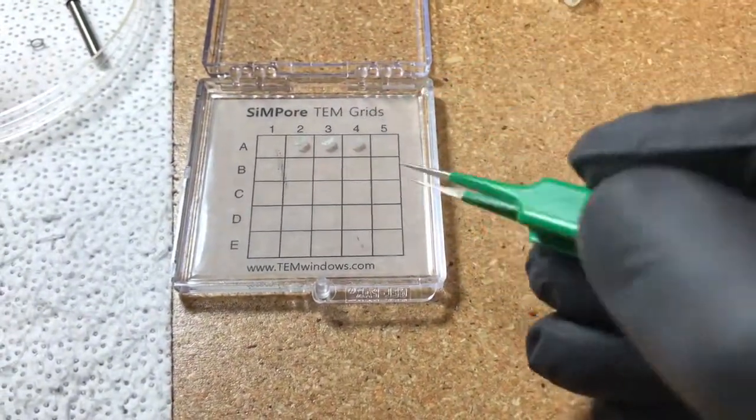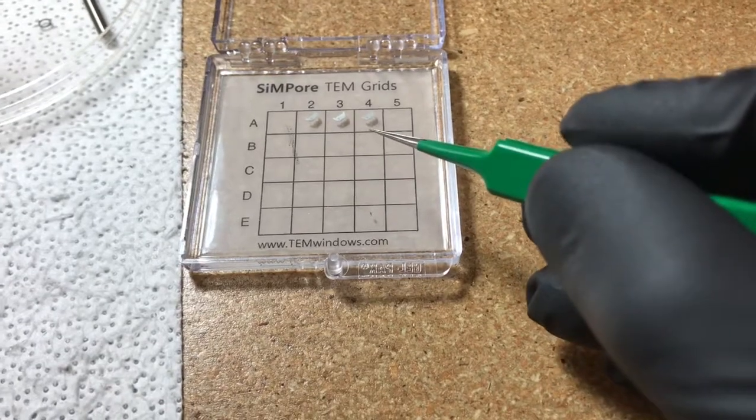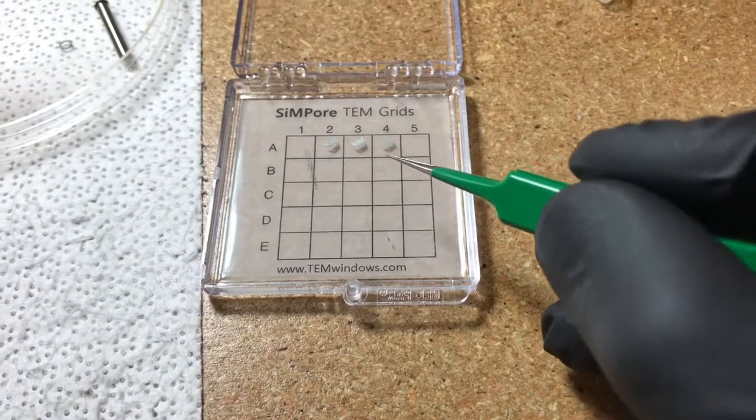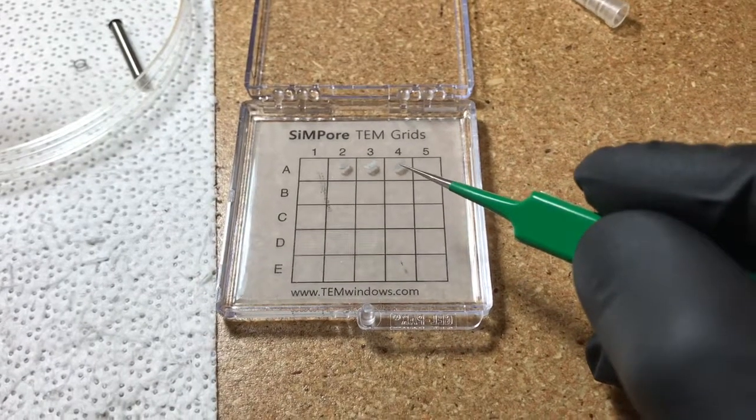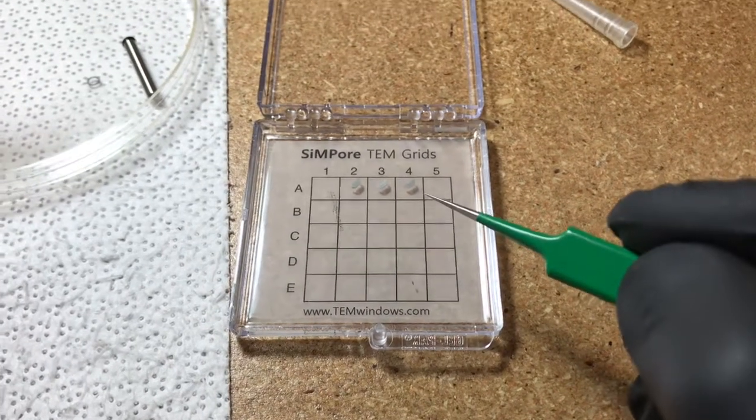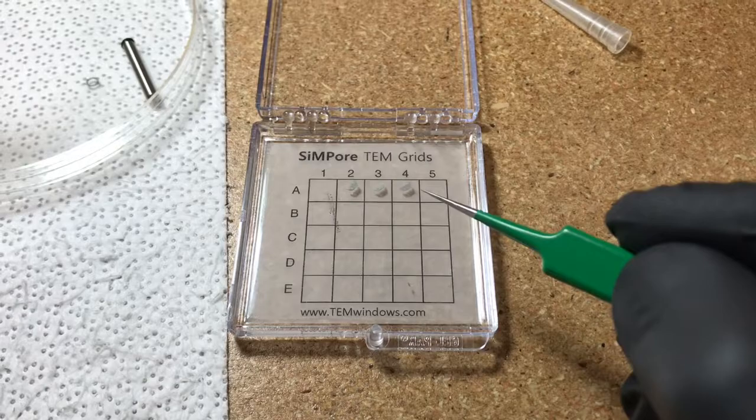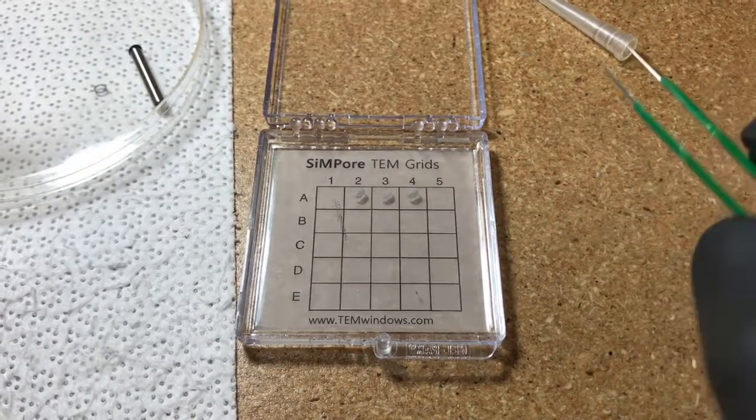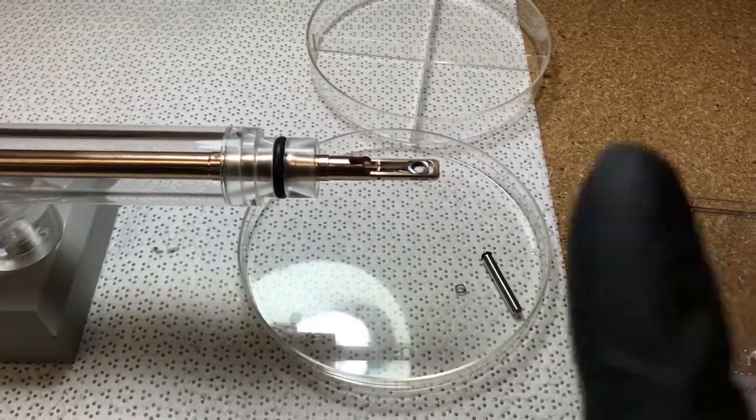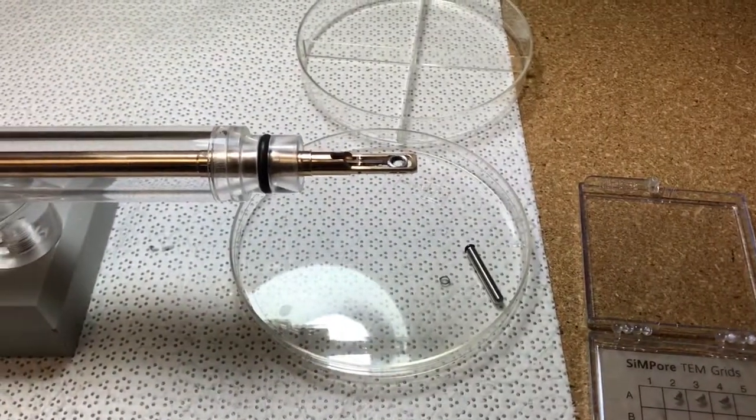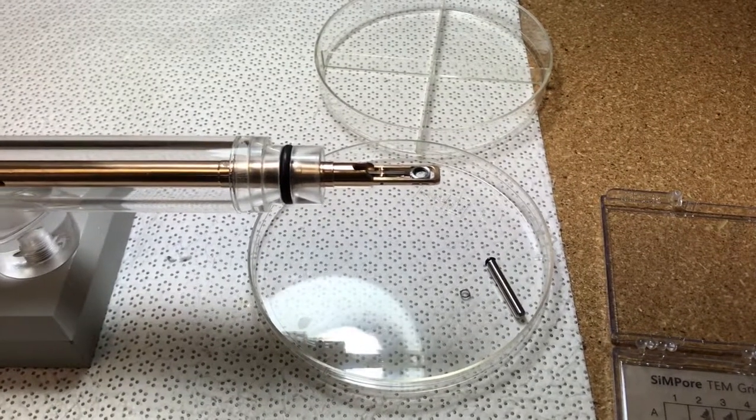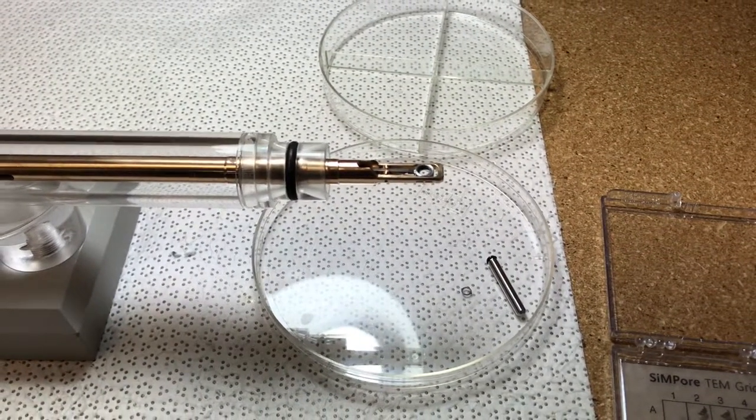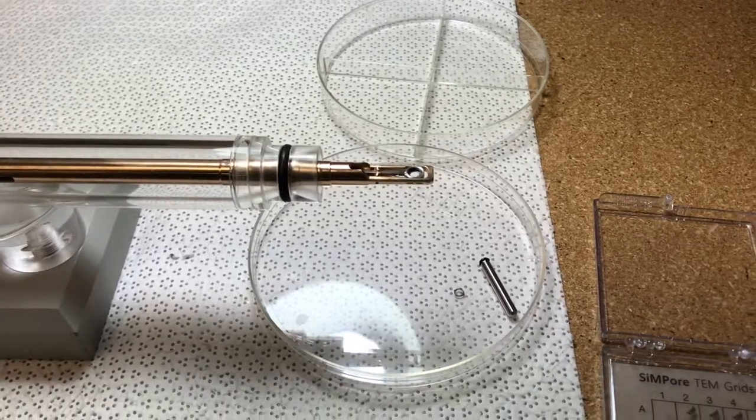You can see here I've got the rounded edge of the grid facing down and pointing up are the fingers. When I load this into the holder, I want to load the grid with the fingers pointing away from me. The reason for that being, if you end up doing any EDS analysis, that gives you clear line of sight to your detector.